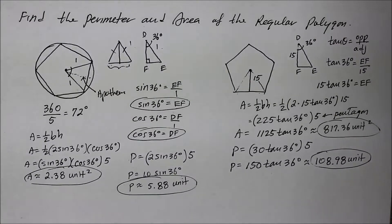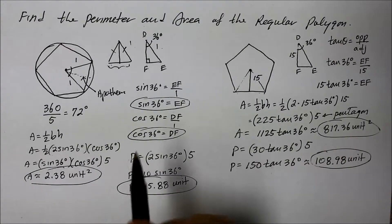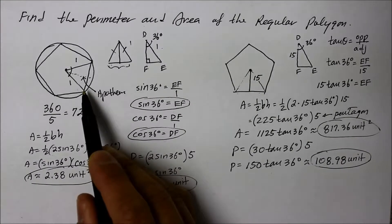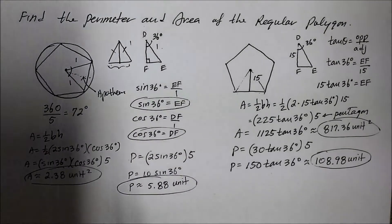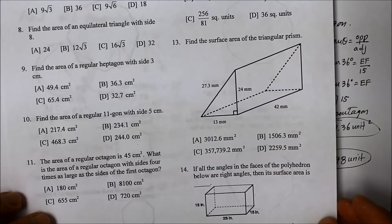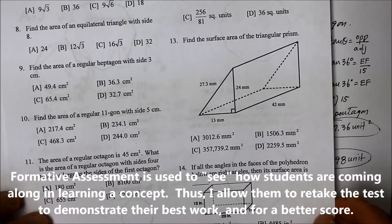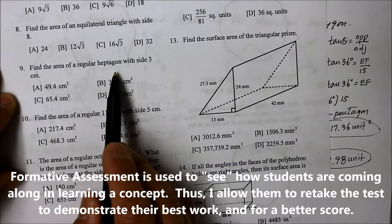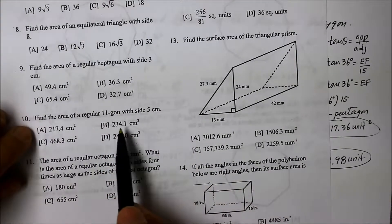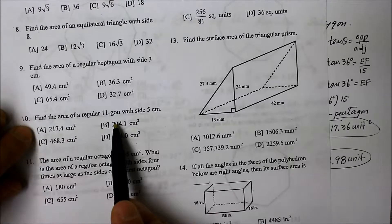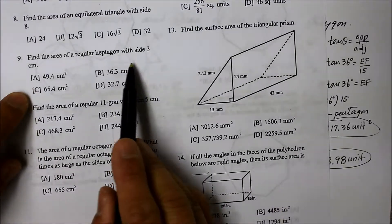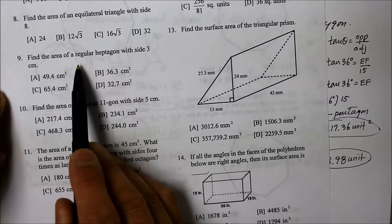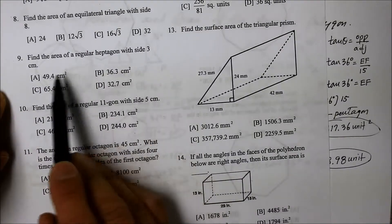This instructional video is an extension on the areas and perimeters of a regular polygon. Last time we talked about finding the area and perimeter of the pentagon, and my students were given a formative assessment to see how far they have gone with this concept. One of the questions they were given was the area of a regular heptagon — and they got stuck. Find the area of a regular heptagon with a side of 3 centimeters.